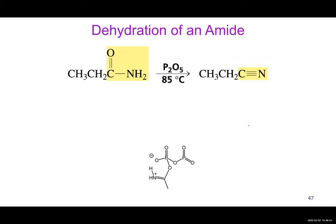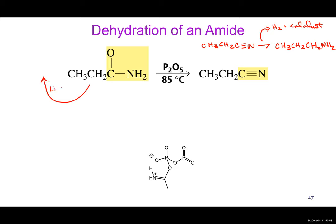One very important reaction of amides: you can form a nitrile from an amide using P2O5 at 85°C, and then from a nitrile you can make a primary amine through hydrogenation — H2 with a catalyst. Another route to primary amines is using lithium aluminum hydride (LiAlH4), which will directly convert an amide to a primary amine through a reduction reaction.